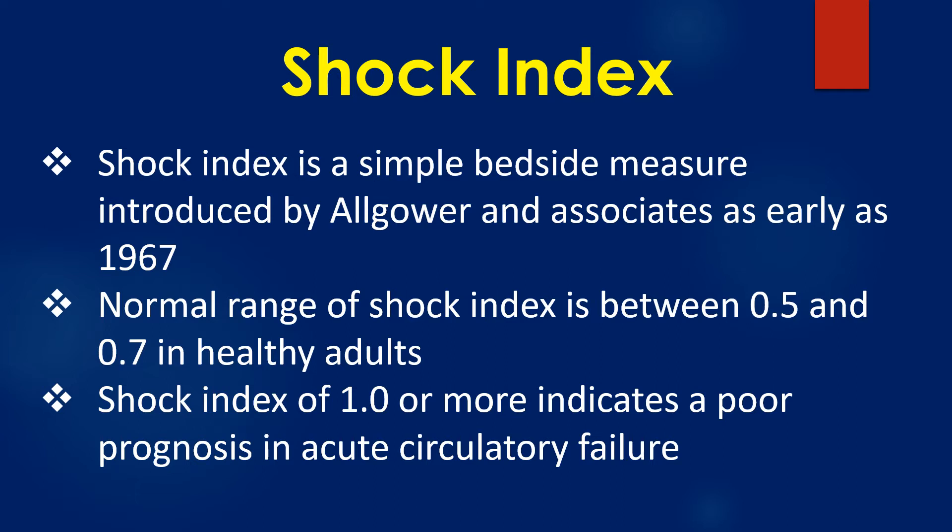The normal range of shock index is between 0.5 and 0.7 in healthy adults. A shock index of 1 or more indicates poor prognosis in acute circulatory failure.